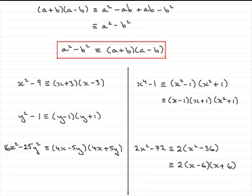I hope you've been able to follow this particular idea. If you spot this pattern now — a squared minus b squared, called the difference of two squares — you can start to factorize expressions like this into this format. That brings us to the end of this tutorial on the difference of two squares.